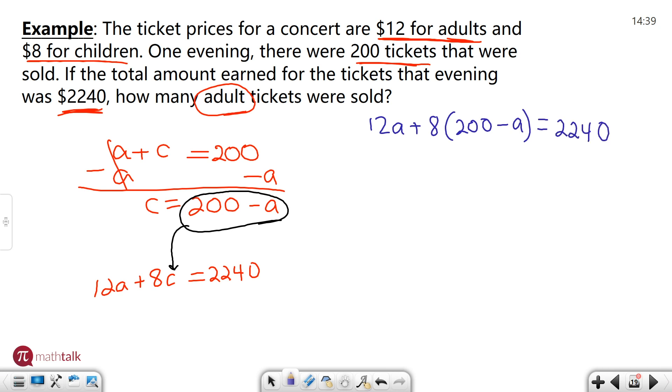Okay? So now I need to kind of break this equation down and solve for it. So 12A plus, if you watched the previous video I talked about how to use the distributive property. You take the number on the outside and multiply by each number on the inside or letter on the inside. 8 times 200 is 1600. 8 times a negative A is negative 8A and that all equals 2240.